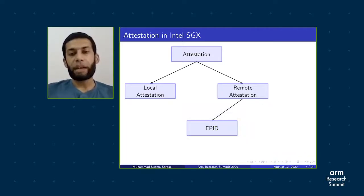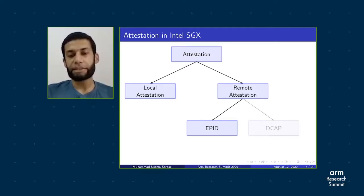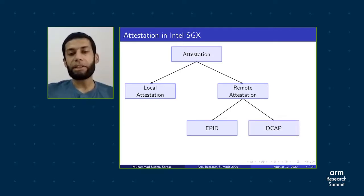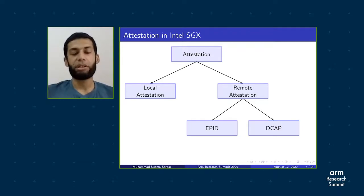There are two main types of remote attestation in Intel SGX. The first is called Enhanced Privacy ID, or EPID in short, which is based on Intel attestation services. Intel recently introduced Data Center Attestation Primitives, or DCAP, which allow a data center to create its own attestation infrastructure.